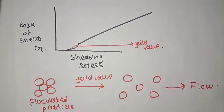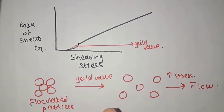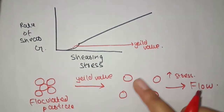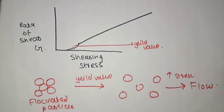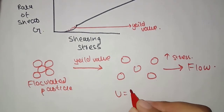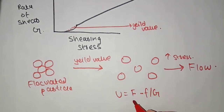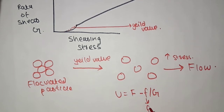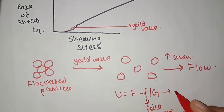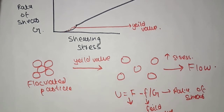When we increase the stress, we start to flow as a Newtonian body. First, we have flocculated particles. When we talk about yield value, the distance between particles starts to grow, and then with more stress the material flows. We have an equation to describe plastic flow: f minus F divided by g, where f shows yield value, g shows the rate of shear, and F shows the shearing stress.